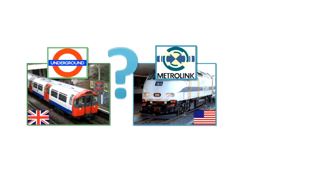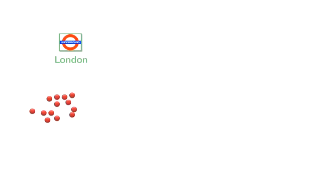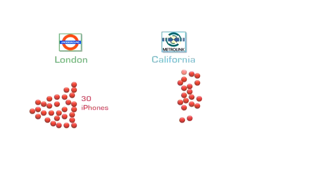Now, if I do a quick count of how many people are using an iPhone on the London Underground, I find that there are actually 30 people. But if I do the same count in California, I see there's also 30 people. So it looks as though they're very similar — you might even say that they're exactly the same.